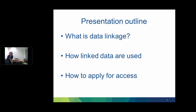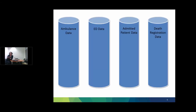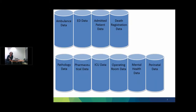Today I'll be talking about what data linkage is, how linked data are used, and how to apply for access to linked data. A lot of people talk about data sitting in silos. For example, within any given hospitalisation, we might have ambulance data, emergency department, admitted patient data, and for some people death registration data. Within any given hospitalisation, there are more isolated data collections — pathology, pharmaceuticals, intensive care unit, operating room, mental health, and perinatal data, to name a few.